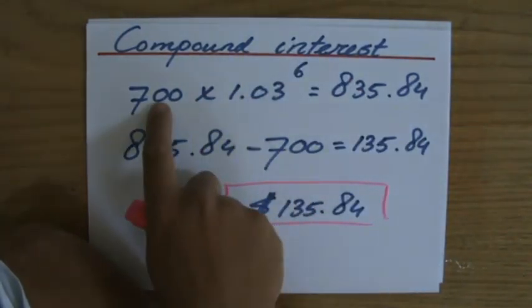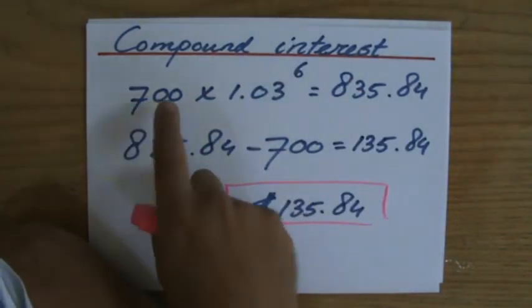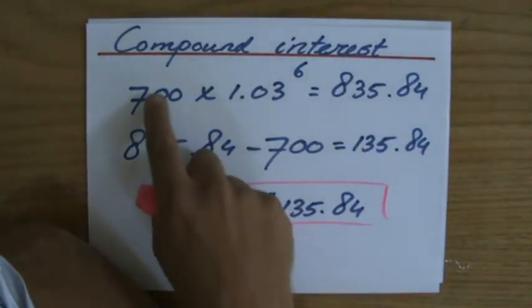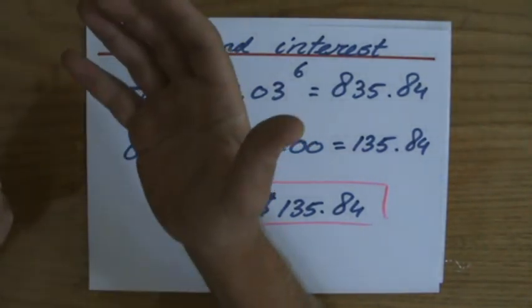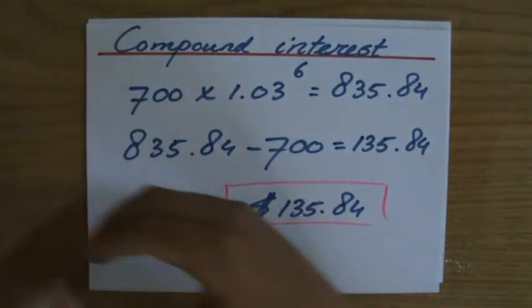I got to subtract it by 700, because that's not my interest. That is my own money, that's the money I gave to the bank. But the bank gave me $135.84 interest. I hope that was useful. Have a nice day.